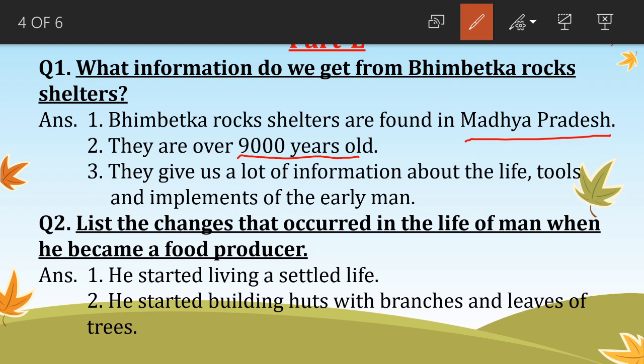Third, they give us a lot of information about the life, tools, and implements of early man. The next question is: List the changes that occurred in the life of man when he became a food producer.